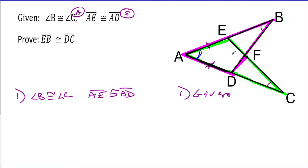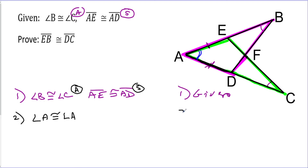If I have two angles and a side, I can prove that the triangles are congruent. I don't have a whole lot to write down. Angle B is congruent to angle C — that's an angle. AE is congruent to AD — that's a side. And angle A is congruent to angle A. The angle A of the purple triangle is the same as the angle A of the green triangle. This is called the reflexive property — I'll write POC, property of congruence. When something is congruent to itself, we call that the reflexive property.